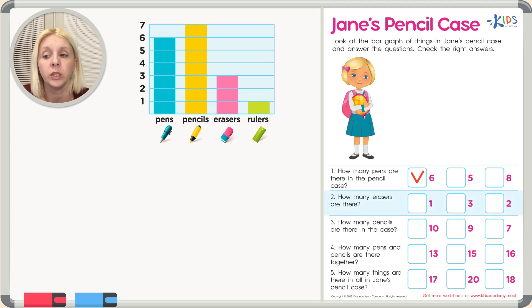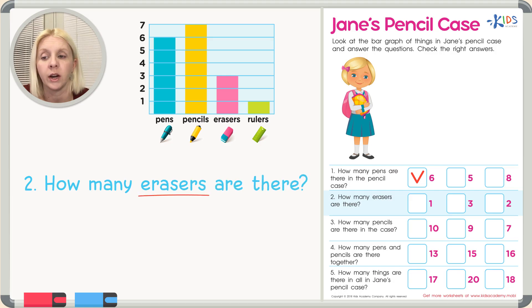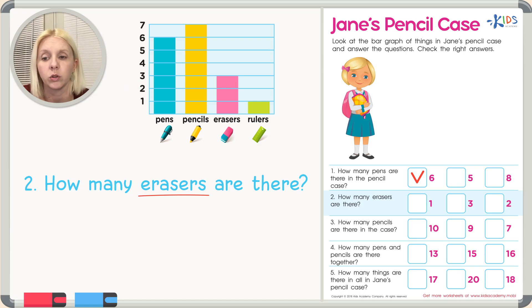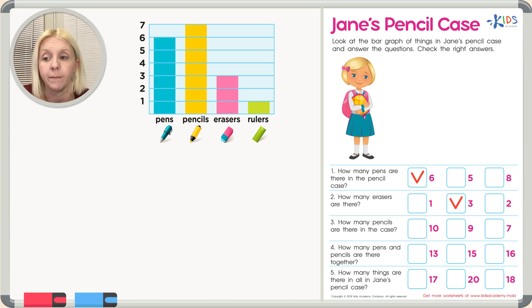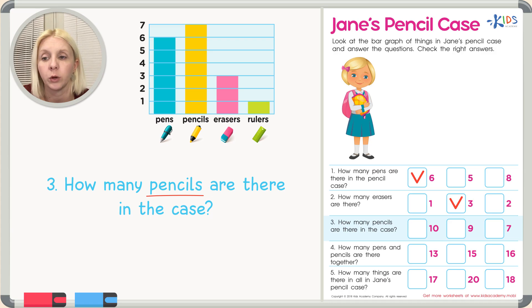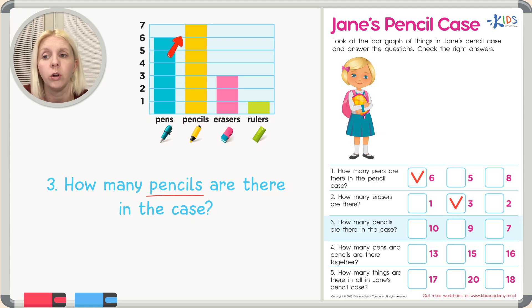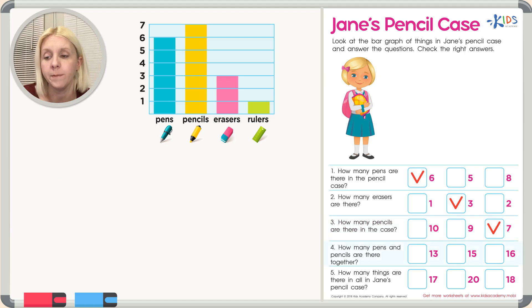Number two says: how many erasers are there? Let's find erasers in the graph — pens, pencils, erasers — there it is. How many erasers? We go all the way across and measure where that bar goes: it goes to the number three. So we've got three erasers. Check next to three. The next question: how many pencils? Find pencils in the graph — that bar goes all the way up to number seven. Check next to seven.